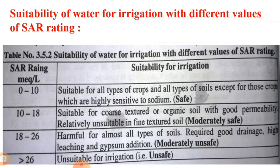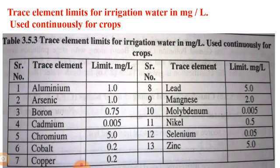If SAR is more than 26 milliequivalents per litre, that water is unsuitable and unsafe for irrigation purposes, because the sodium absorption ratio in that water is more than 26.